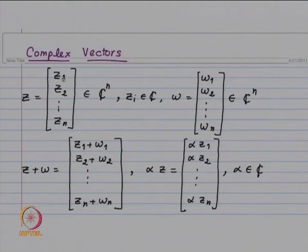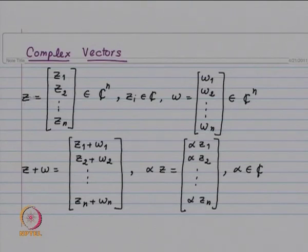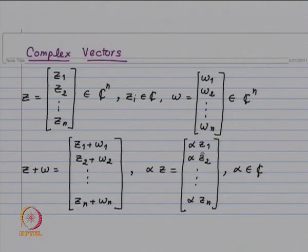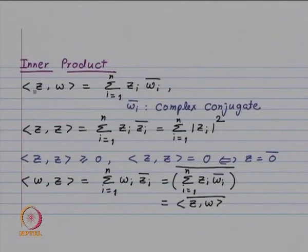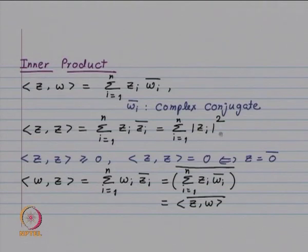We have z to be a complex vector, z_1, z_2, ..., z_n, where each z_i is a complex number, and w is another n by 1 vector. As before, z plus w will be component-wise addition: z_1 plus w_1, z_2 plus w_2, ..., z_n plus w_n. Alpha times z means each component gets multiplied by alpha. For the inner product, when we had real vectors, the inner product was the summation x_i y_i. Now the change is: you consider z_i times w_i bar, where w_i bar is the complex conjugate. When you consider inner product of z with itself, it will be the summation of mod z_i squared.